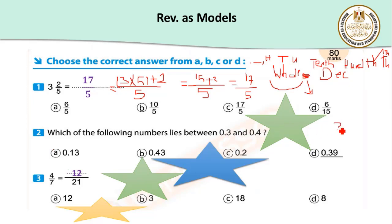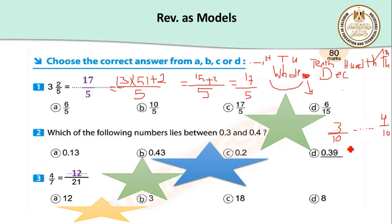So 0.3, or three-tenths, means three over ten. And another one: four over ten. How can I find the decimal number between three-tenths and four-tenths? Let's remember: three out of ten equals 0.3.